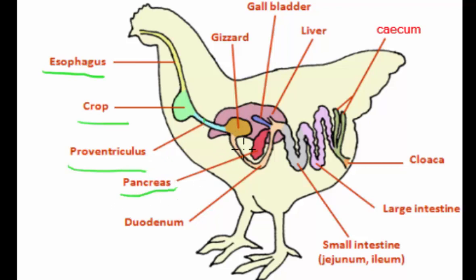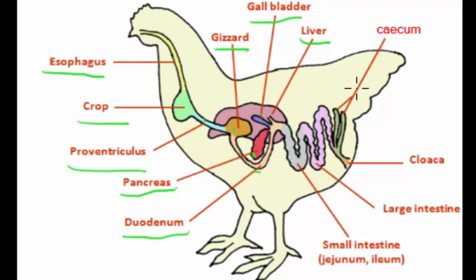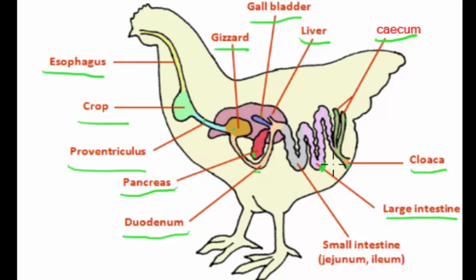This is the location of the pancreas, and this is the duodenum. We have the gizzard — this is the part of the gizzard. There's the gallbladder — this part is the gallbladder. The liver is close to the gallbladder. This is the location of the cecum. This is the cloaca, and this is the large intestine.